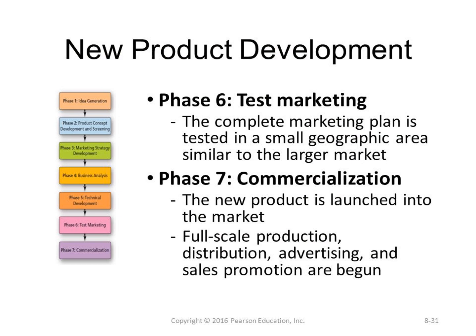The new product development phases are: phase 1, idea generation; phase 2, product concept development and screening; phase 3, marketing strategy development; phase 4, business analysis; phase 5, technical development; phase 6, test marketing; and phase 7, commercialization. In phase 6, the complete marketing plan is tested in a small geographic area similar to the larger target market.